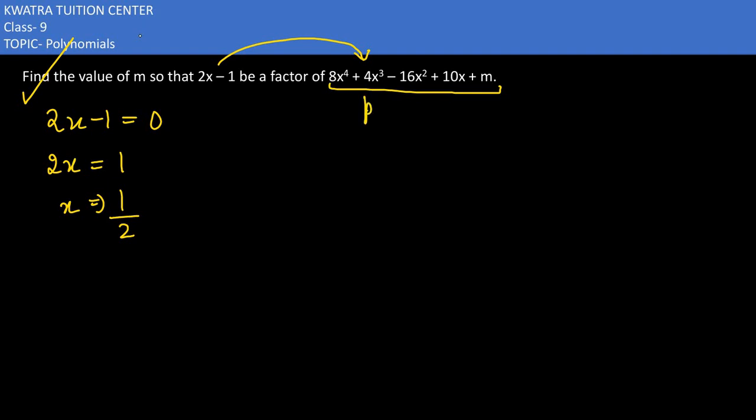Now put it in this polynomial so that we can get the value of m. We will substitute P(x) as 0 because we know this is a factor, so the polynomial becomes 0. That's the situation - this would be 0.